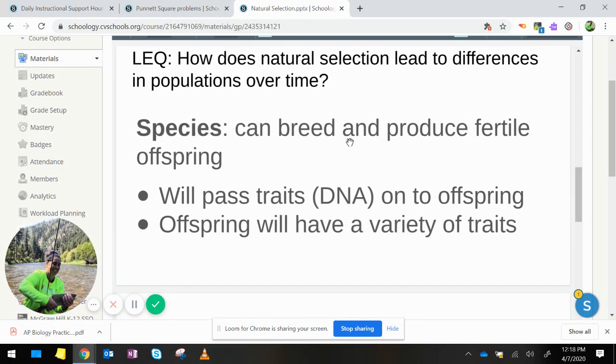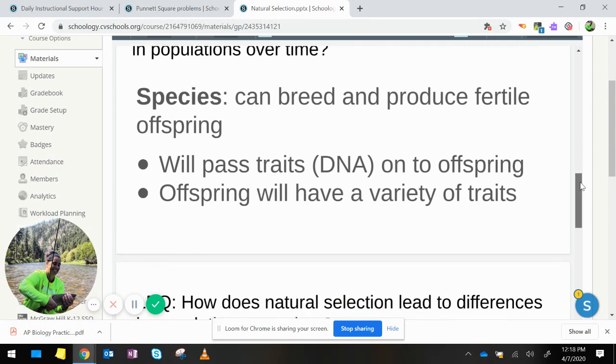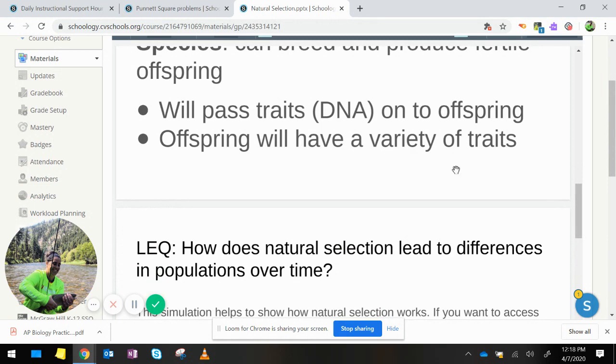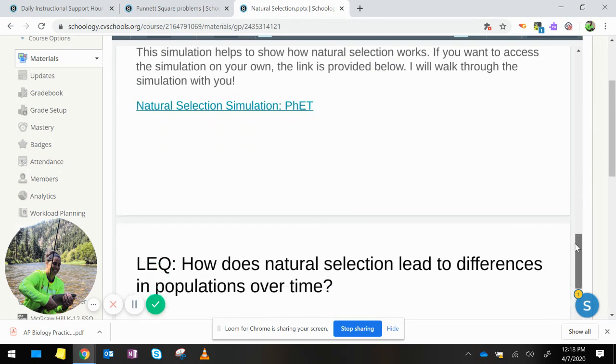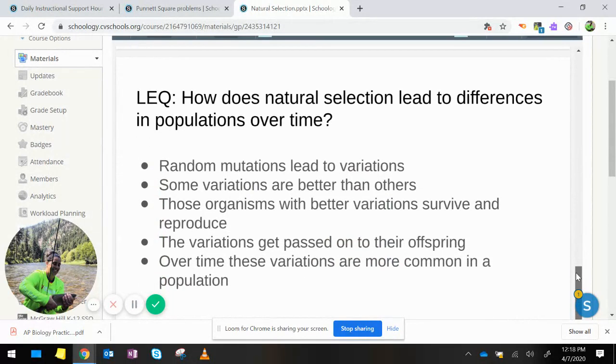We said a species is a group of organisms that can breed and produce fertile offspring. They'll pass their traits on and offspring will have a variety of traits. We looked at a simulation to show you how this worked, and we saw that random mutations lead to variations.